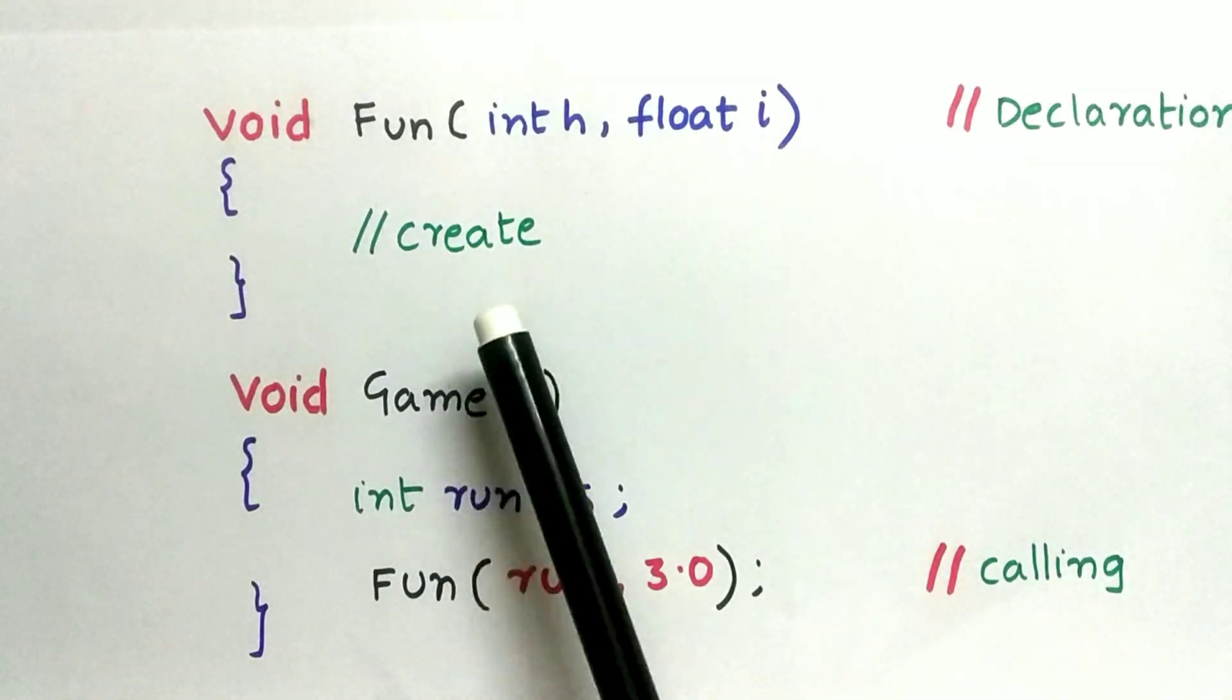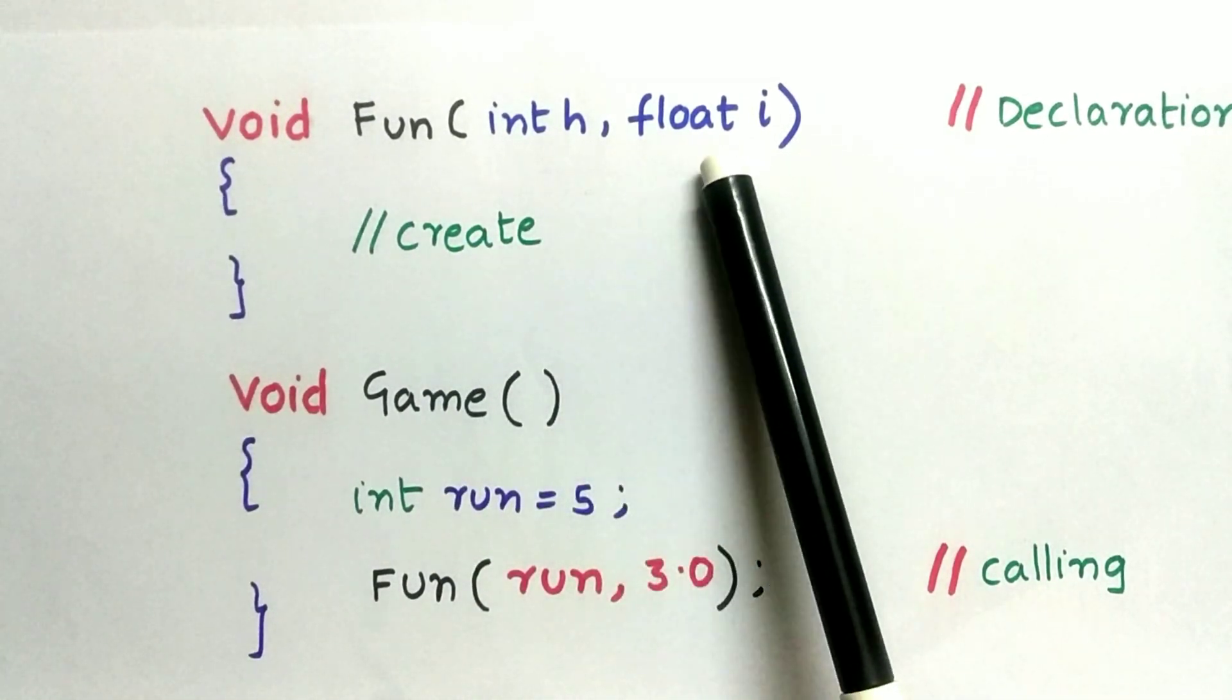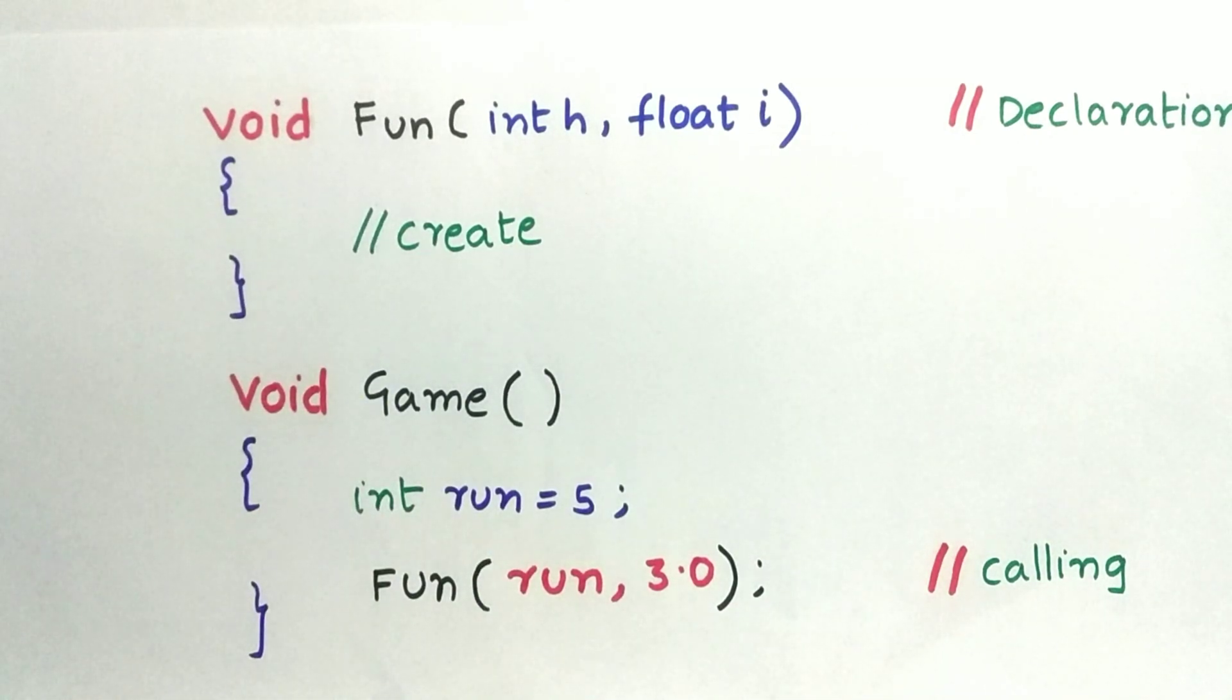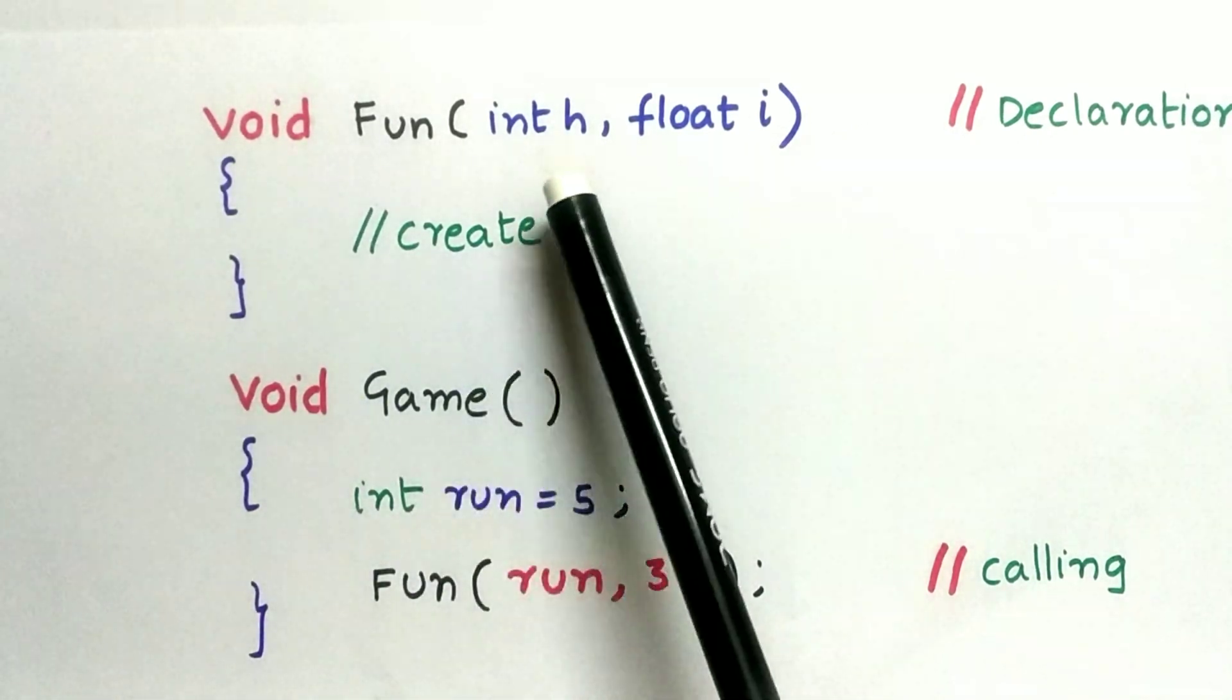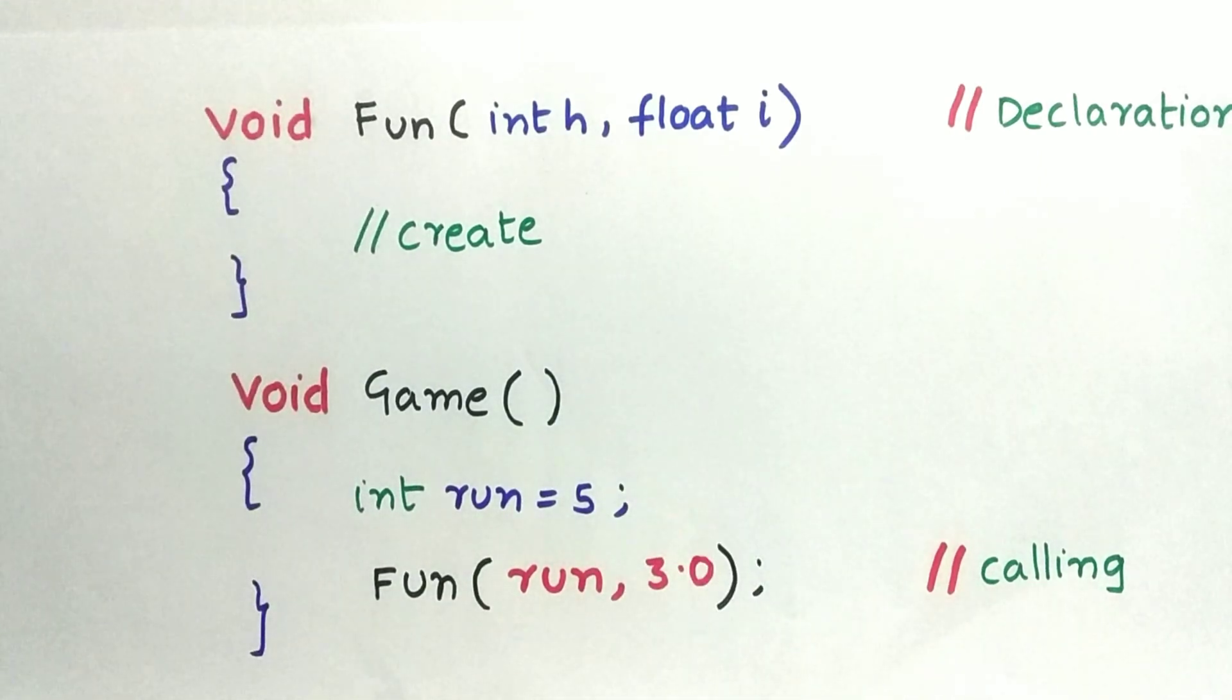In this declaration we have variables int h and float i. This is part of the declaration. These variables which are part of a declaration are called parameters.